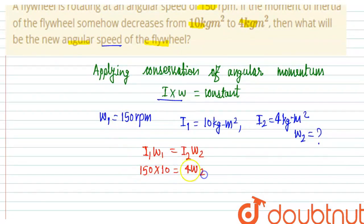Now we have 150 times 10 equals 4 times omega₂. To find omega₂, we calculate 1500 divided by 4 equals omega₂.